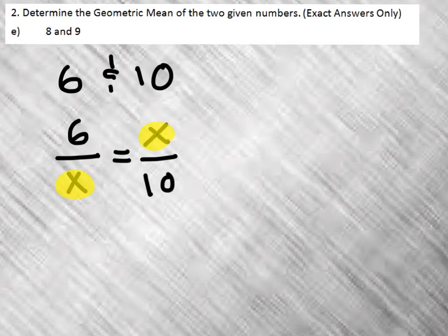When we cross multiply, we get x squared equals 60.